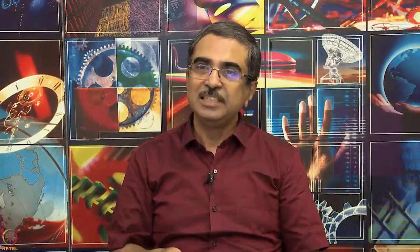As usual we will not close the discussion without showing you an actual spectrum. This is the expectation: one single line. This is the reality: if you use a good enough IR spectrometer, a high resolution IR spectrometer, instead of one band you get two branches of lines. Where do these branches arise from? These branches arise from the fact that every vibrational level is associated with rotational levels.